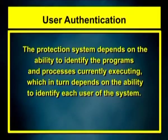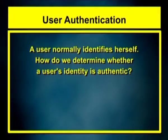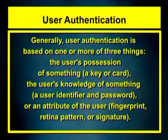The protection system depends on the ability to identify the programs and processes currently executing, which in turn depends on the ability to identify each user of the system. How do we determine whether a user's identity is authentic? Generally, user authentication is based on one or more of three things: the user's possession of something, usually a key or a card; the user's knowledge of something, such as a user identifier or a password; or an attribute of the user, such as fingerprint, retina pattern or signature.